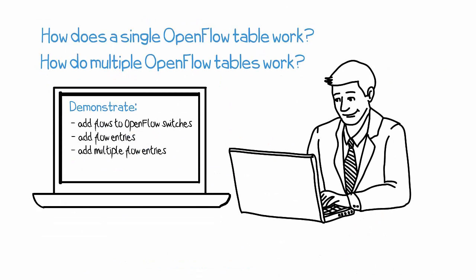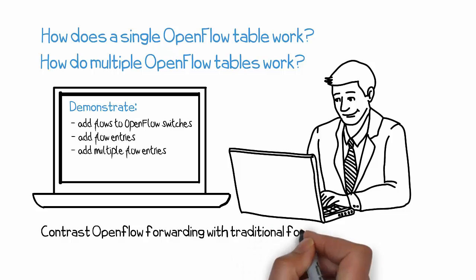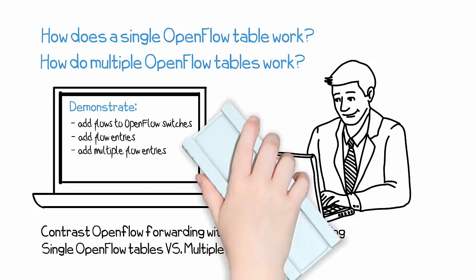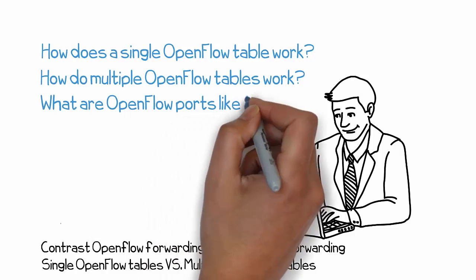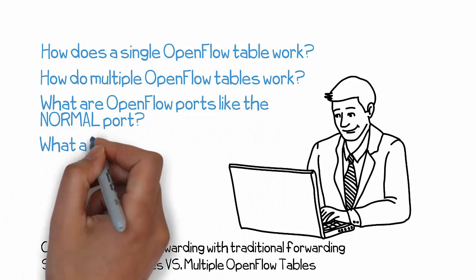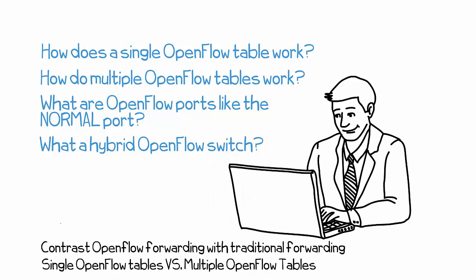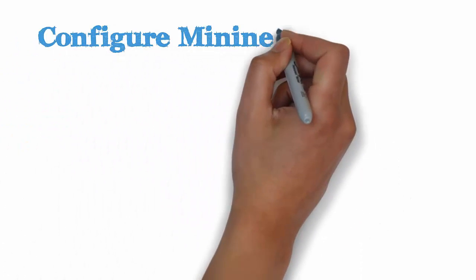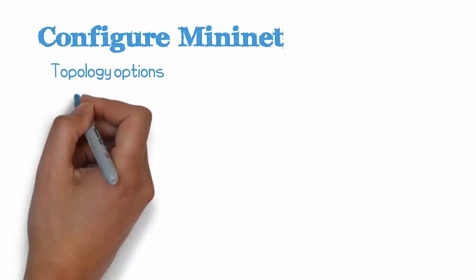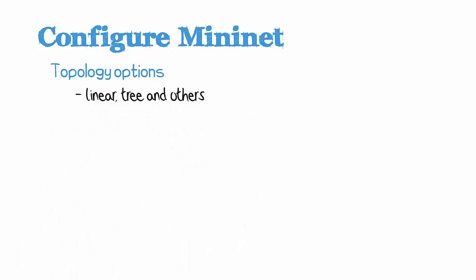This is used to scale and rapidly deploy switches and make changes in their data centers. The course will cover some of the fundamentals of OpenFlow, will contrast OpenFlow forwarding with traditional forwarding, and talk about single OpenFlow tables versus multiple OpenFlow tables. We'll discuss OpenFlow ports such as the normal port or controller port, and discuss what a hybrid OpenFlow switch is. I'm also going to show you how to configure Mininet with various controllers and show you Mininet topology options such as linear, tree, and others.